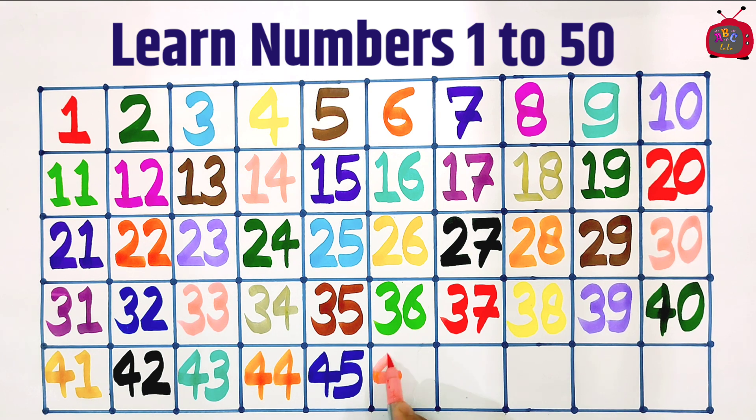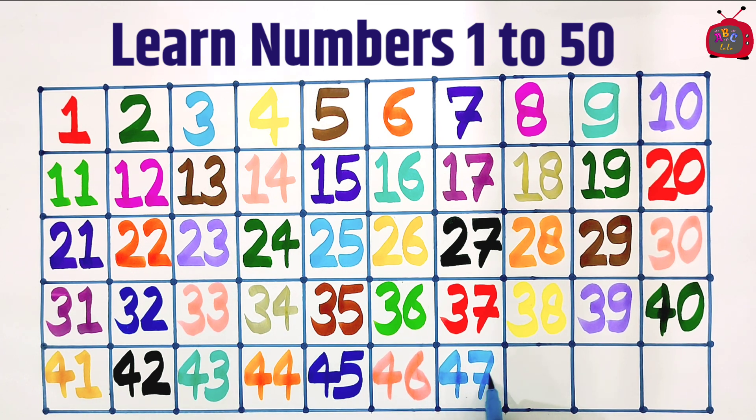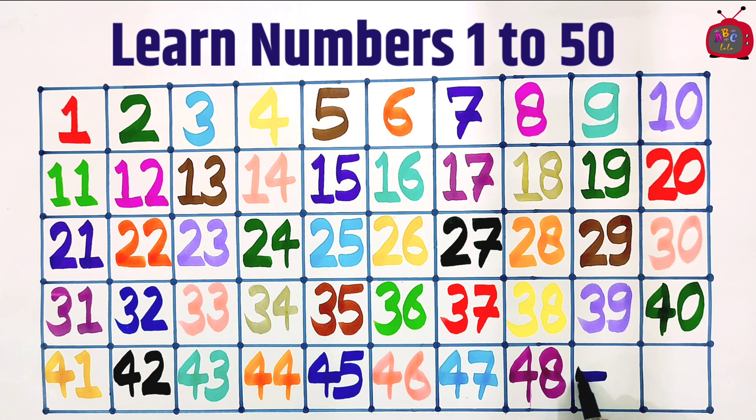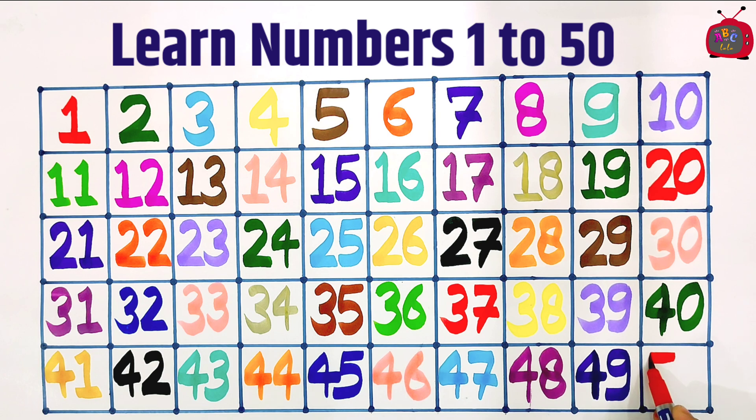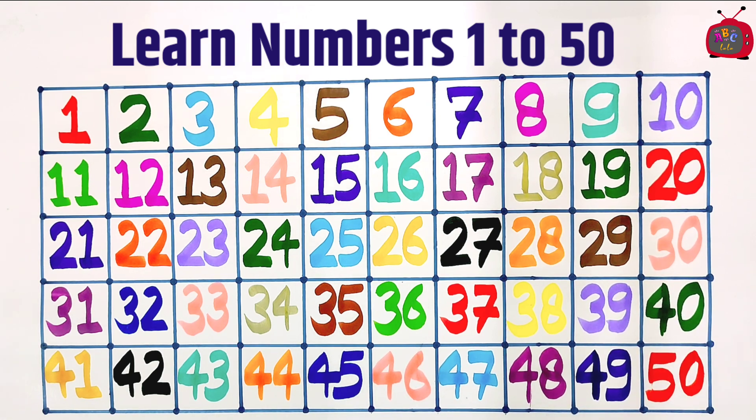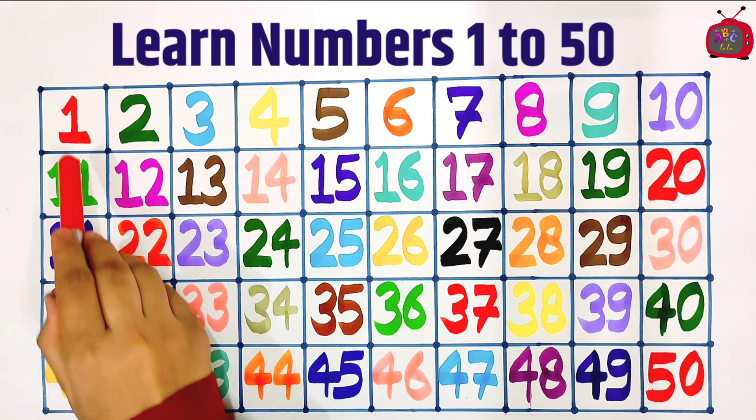Four, six: forty-six. Four, seven: forty-seven. Four, eight: forty-eight. Four, nine: forty-nine. Five, zero: fifty. Let's revise.